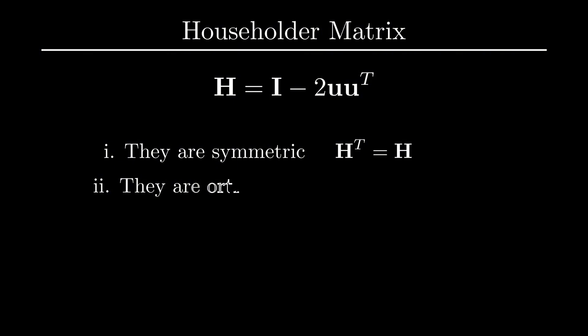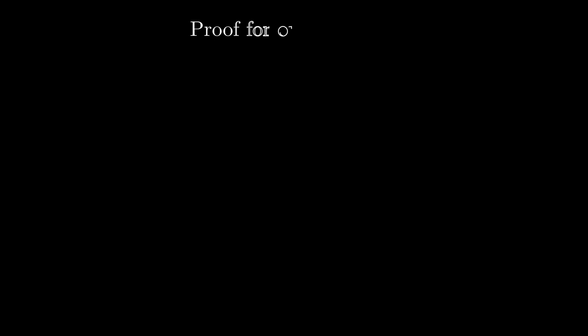The second property is that these matrices are also orthogonal. Recall that an orthogonal matrix is a square matrix whose inverse is its transpose. Hence, it must satisfy this equation: Q^T Q equals the identity. This is a special case of a semi-orthogonal matrix, which we discussed in the last video, and if you remember, those matrices were allowed to be rectangular, whereas our H matrix has to be square.